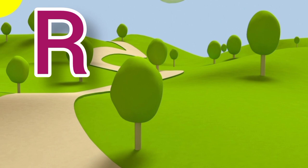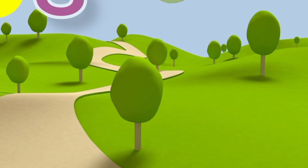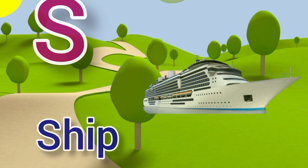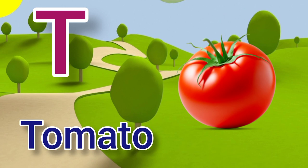R for rose, rose means ghosla. S for sheep, sheep means jha. T for tomato, tomato means tomato.